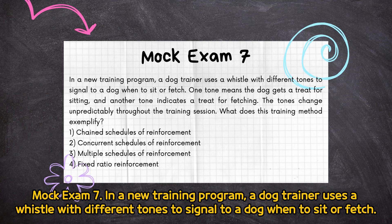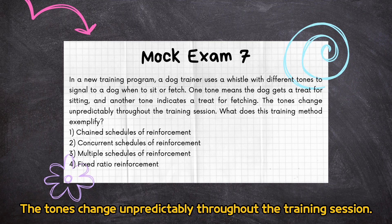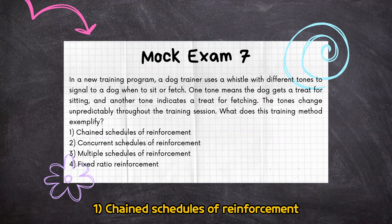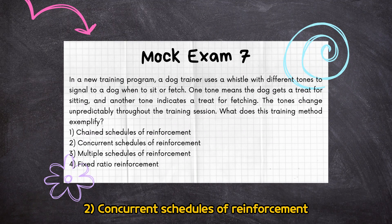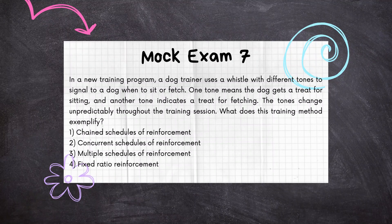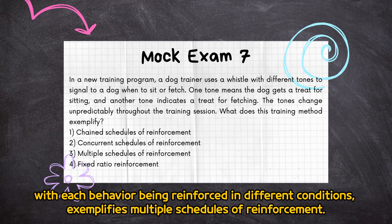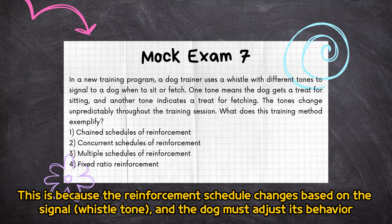Mock Exam 7: in a new training program, a dog trainer uses a whistle with different tones to signal to a dog when to sit or fetch. One tone means the dog gets a treat for sitting, and another tone indicates a treat for fetching. The tones change unpredictably throughout the training session. What does this training method exemplify? (1) Chain schedules of reinforcement, (2) Concurrent schedules of reinforcement, (3) Multiple schedules of reinforcement, (4) Fixed ratio reinforcement. Correct answer is 3: multiple schedules of reinforcement. The dog trainer's use of different whistle tones to signal when to sit or fetch, with each behavior reinforced in different conditions, exemplifies multiple schedules of reinforcement, because the reinforcement schedule changes based on the signal (whistle tone).